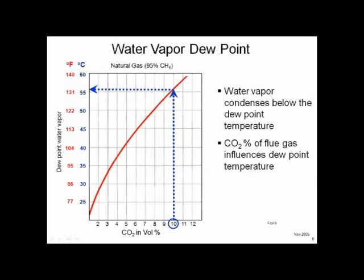Let's tie all this together and look at efficiencies. This chart plots the percent CO2 in the stack versus the condensing temperature of the heat exchanger. In other words, if you let the heat exchanger get below certain temperatures, that water vapor is going to condense and rain in the boiler, creating liquid along with CO2 to deal with. It's important to begin to grasp these numbers.